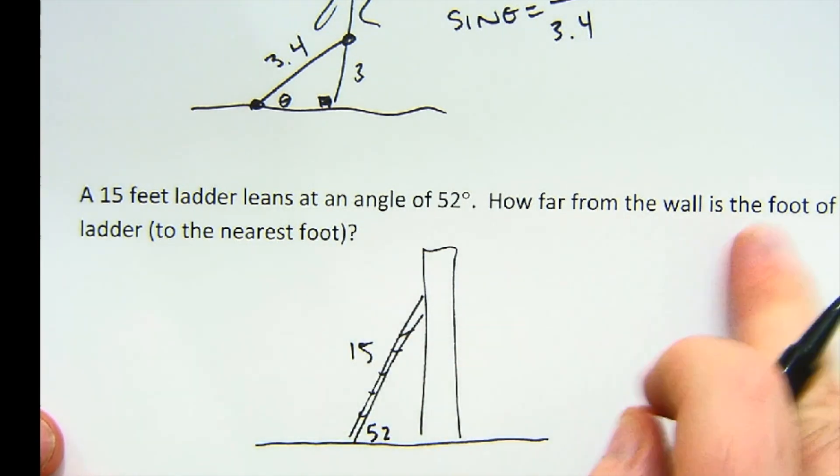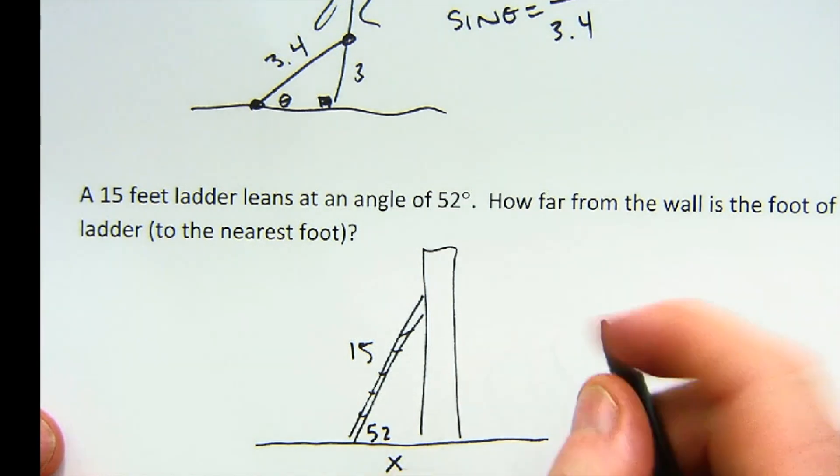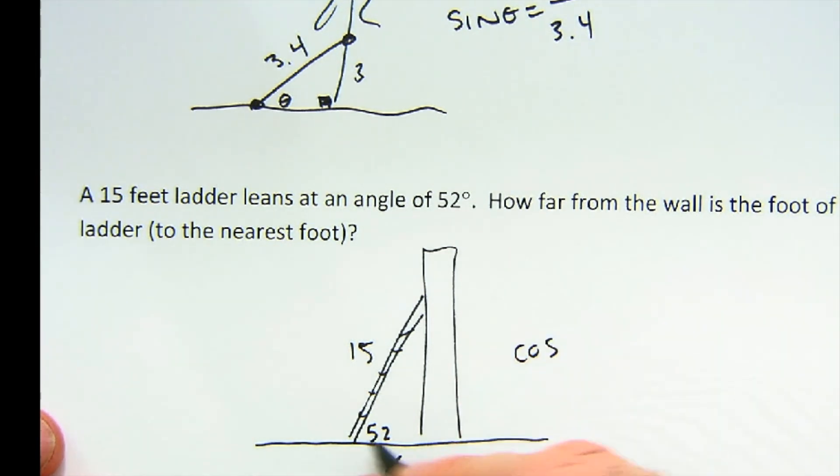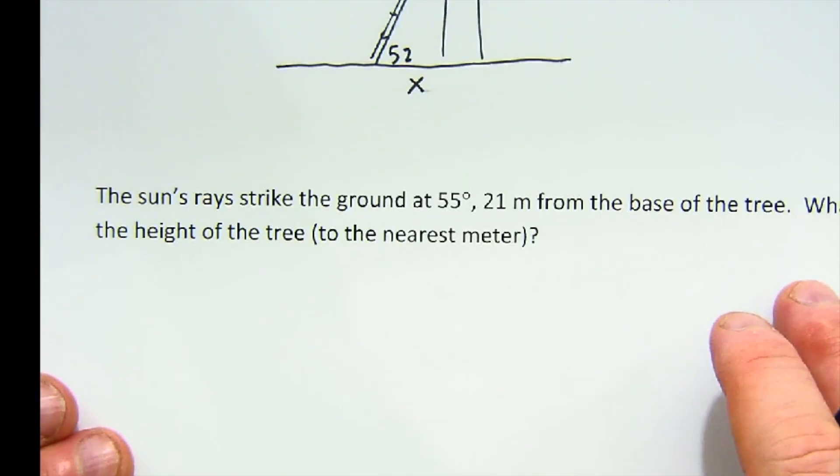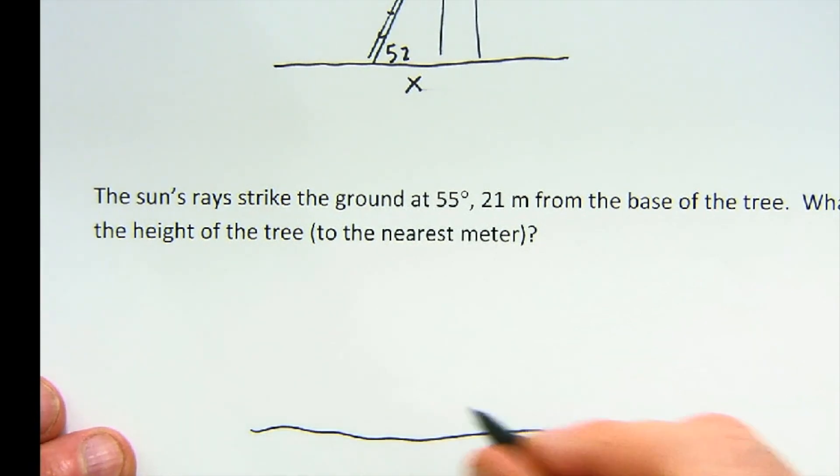How far from the wall is the ladder? This is a cosine question, 52, because this is my adjacent and this is my hypotenuse. I'd solve this problem.